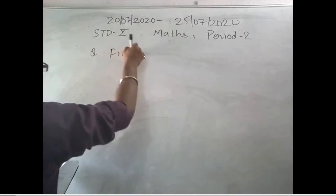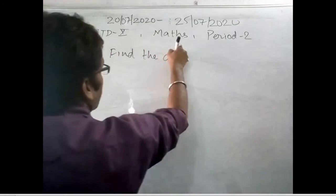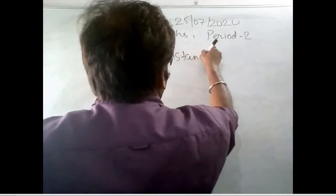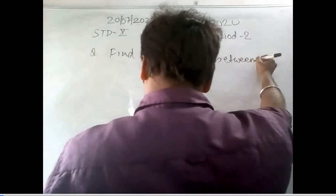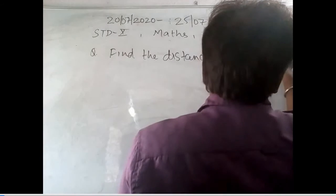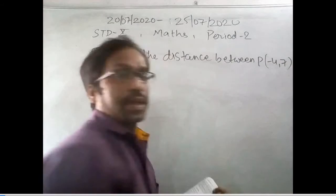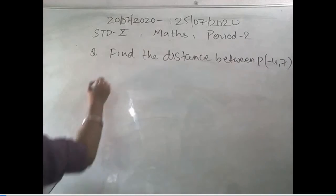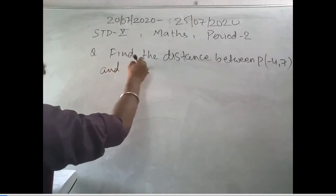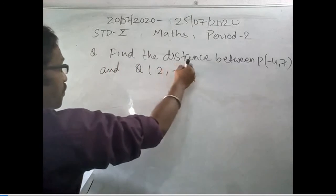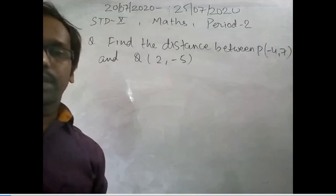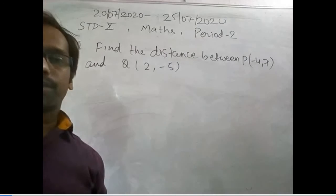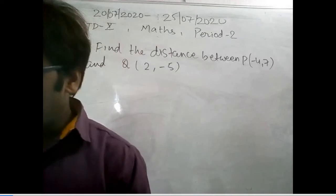Let me write the question first. The question is saying that: find the distance between P(-4, 7) and Q(2, -5). I have to find the distance between P and Q, so obviously I will use my distance formula.